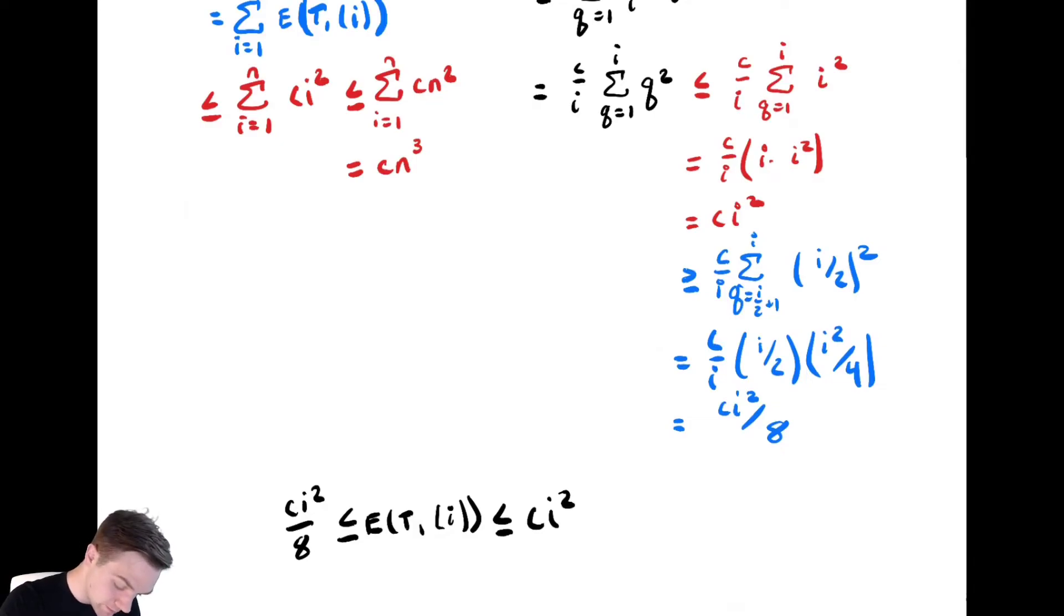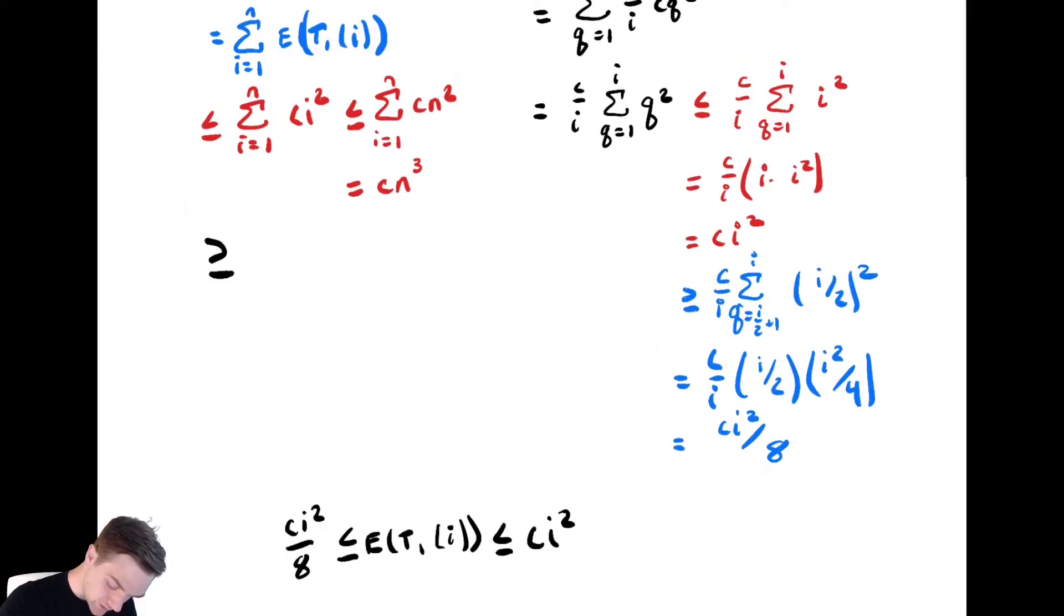To bound it below, it is greater than or equal to, using my lower bound from what I have below, we have the sum from i equals 1 to n of ci² over 8. Now let's split it in half, keep the larger of the two halves, and plug in n/2 over 8.